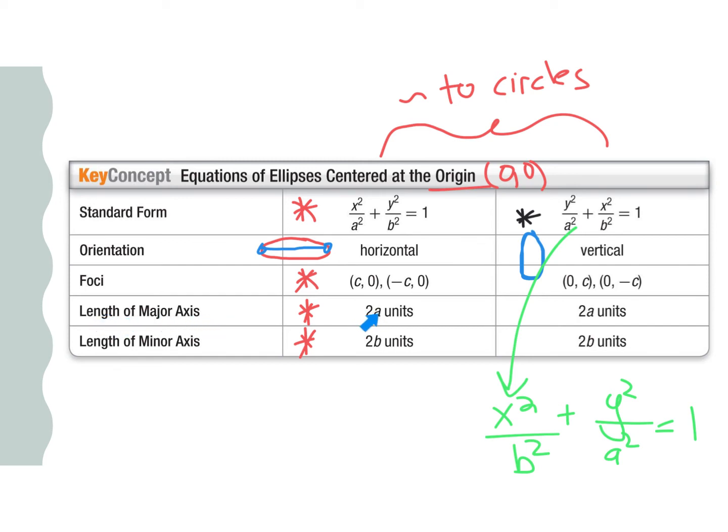But also, again, the length of the major axis is 2 times a, which actually applies back to that again. So your major axis is 2 times these a values and the minor is 2 times b, hence why we switch them around as well.